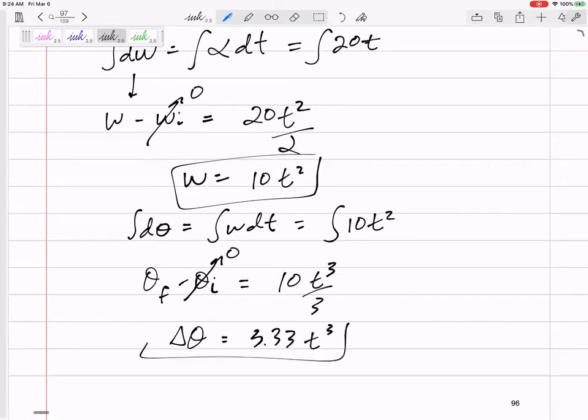Would be t cubed over 3. 3.33t cubed. But you should probably leave it as t cubed. 10 over 3. T cubed. 10 over 3.